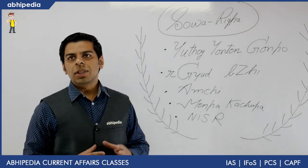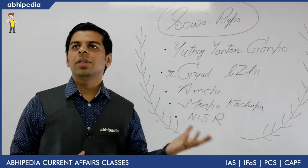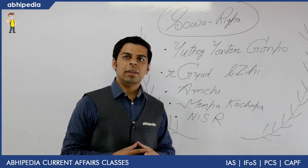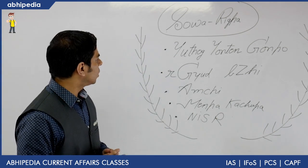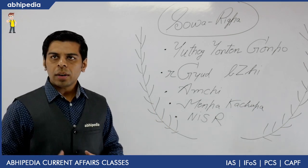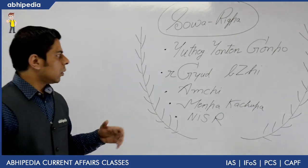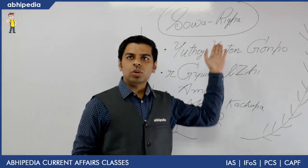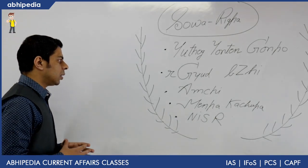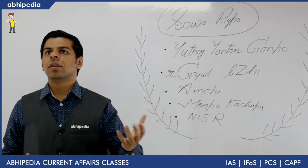Moving to the history: for any discipline there are individuals who have contributed immensely. The key name in Sova Rigpa is Yuthog Yonten Gonbo, regarded as the father of Sova Rigpa. The fundamental textbook of Sova Rigpa is called Yuthi — note the spelling. Yuthi literally translates to 'Four Tantras,' which are the four pillars on which the entire art of Sova Rigpa revolves.